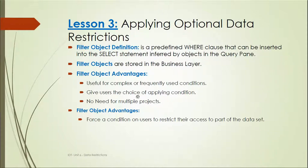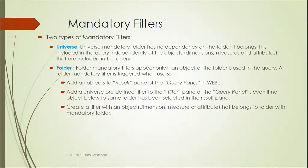The advantage of filter objects is that they are useful for complex or frequently used conditions, and they give users the choice of applying a condition without needing multiple objects. The disadvantage is that it places a condition on users to restrict their access to part of the data source.